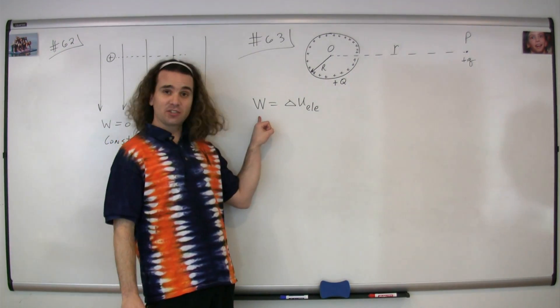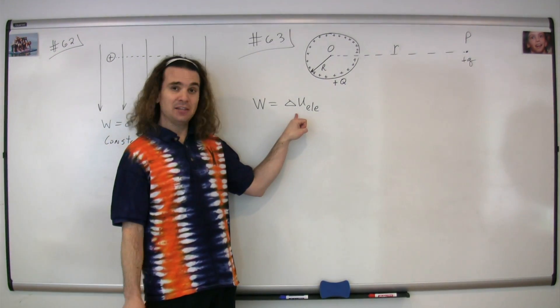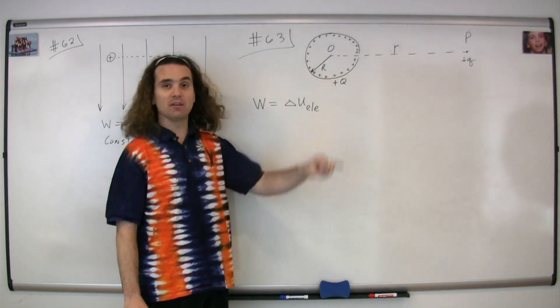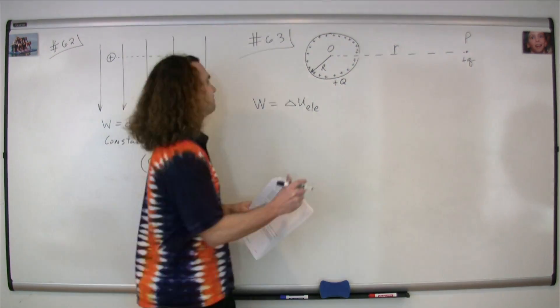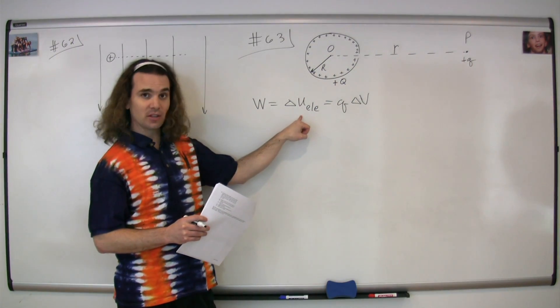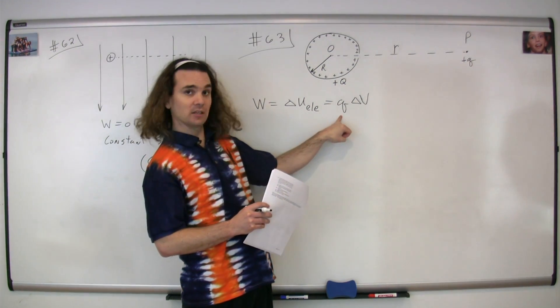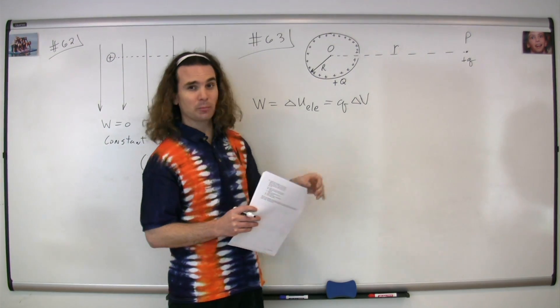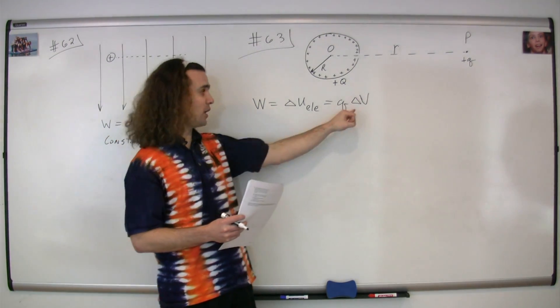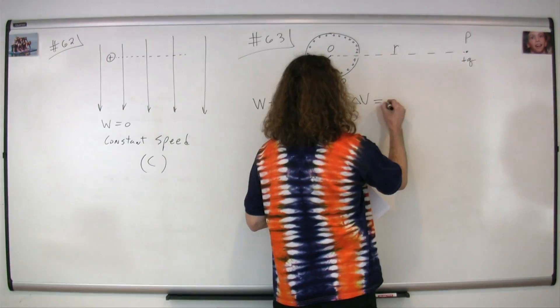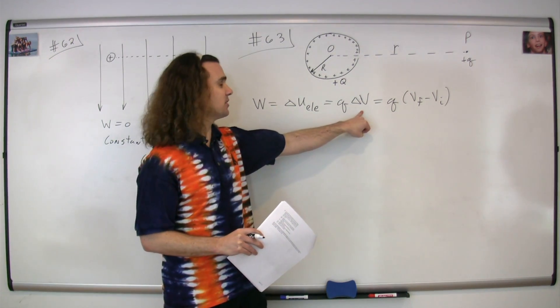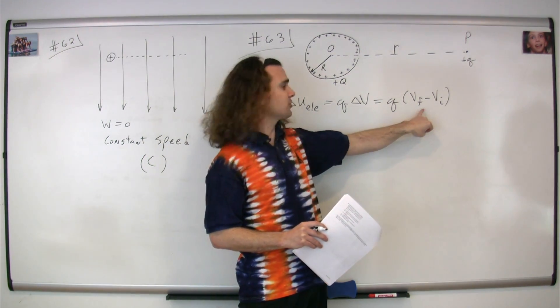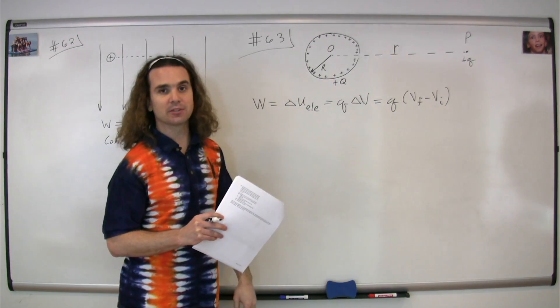The work done by an external agent equals the change in the electric potential energy of this positive little q. The change in electric potential energy equals the charge little q multiplied by the electric potential difference it goes through. Delta is always final minus initial, so this is the final electric potential minus the initial electric potential.